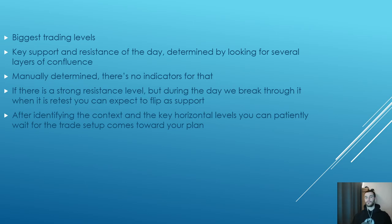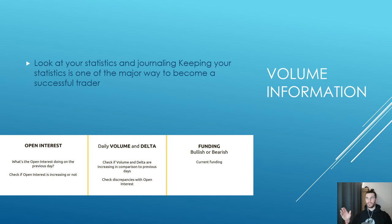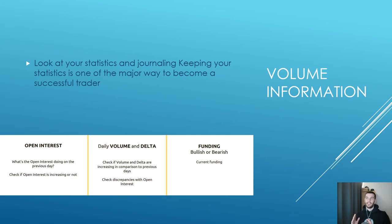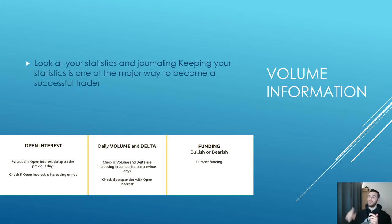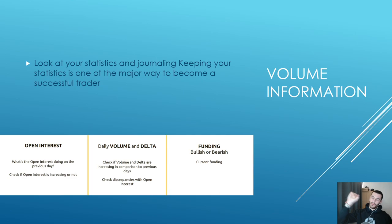Look at your statistics and journaling — keeping statistics is one of the major ways to become a successful trader. For volume information, look at open interest from the previous day. On a medium-term timeframe over the past 14-20 days, if price is going down and open interest is going up, that signals a strong downtrend — be cautious with longs. Also look at daily volume and daily delta, and check if volume and delta are increasing compared to previous days, as well as any discrepancies with open interest.